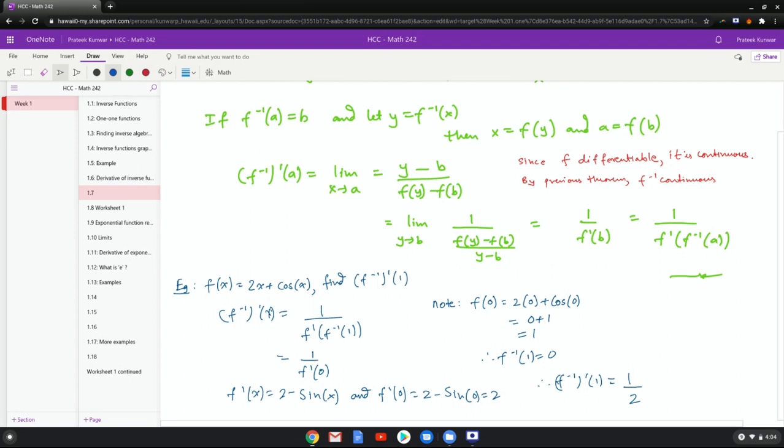You don't have to do that because you know that f inverse prime of x is 1 over f prime of f inverse of 1. So first step would be to find f inverse of 1. To do that you just note f of 0 is 1, which means f inverse of 1 is 0.